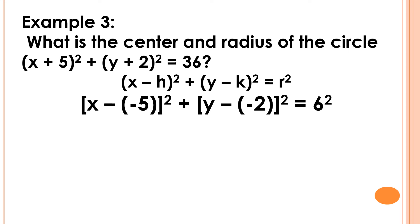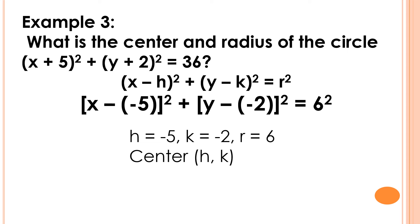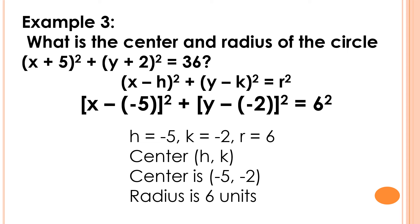Next step, we're going to determine the value of h, k, and r in the given equation. The value of h is negative 5, the value of k is negative 2, and the value of r is 6. Then we're going to determine the center of the circle, wherein the coordinates are (h, k). Substituting, the center of the circle is (negative 5, negative 2), and since the value of r is 6, the radius of the circle is 6 units.